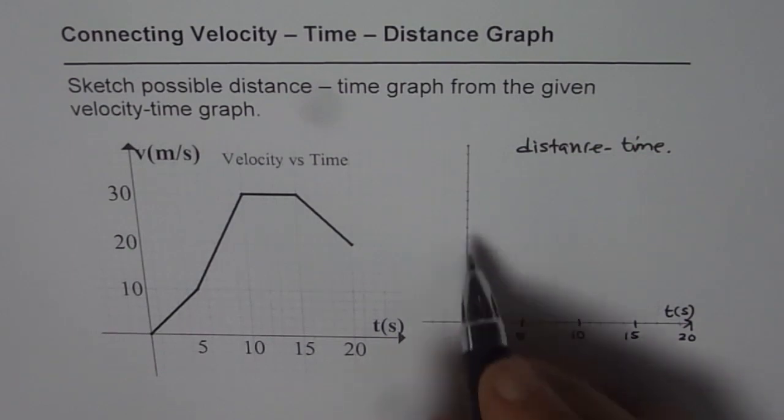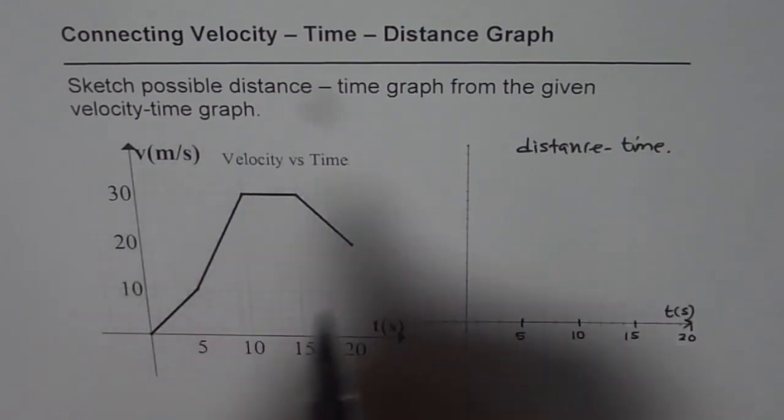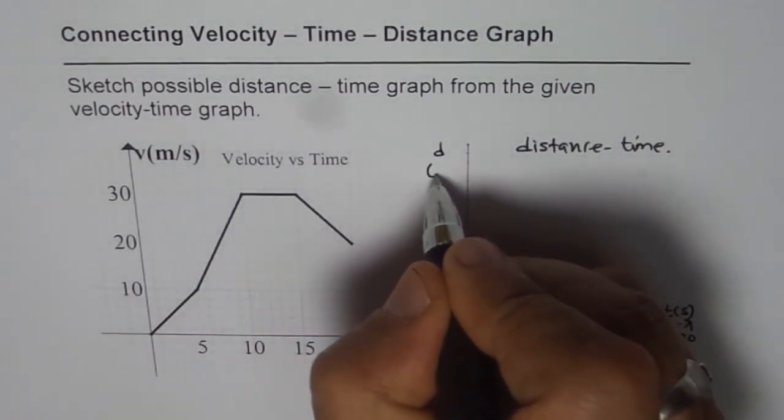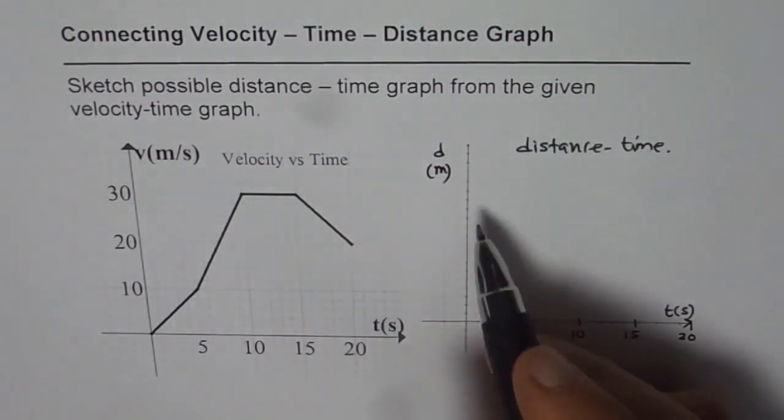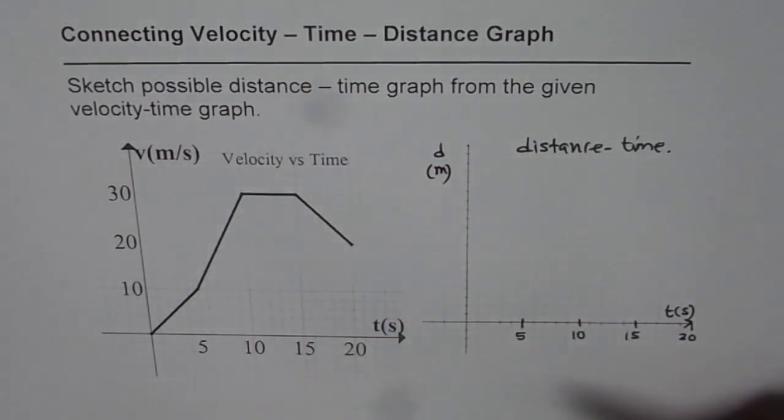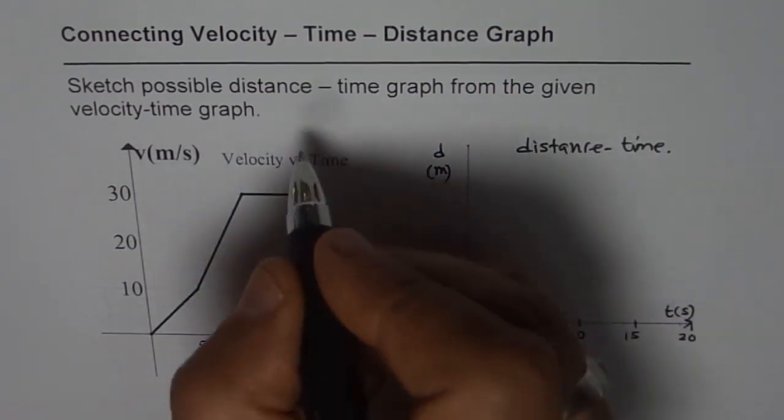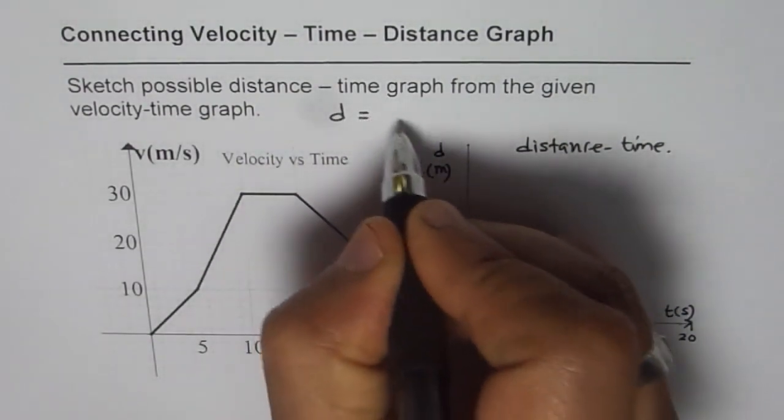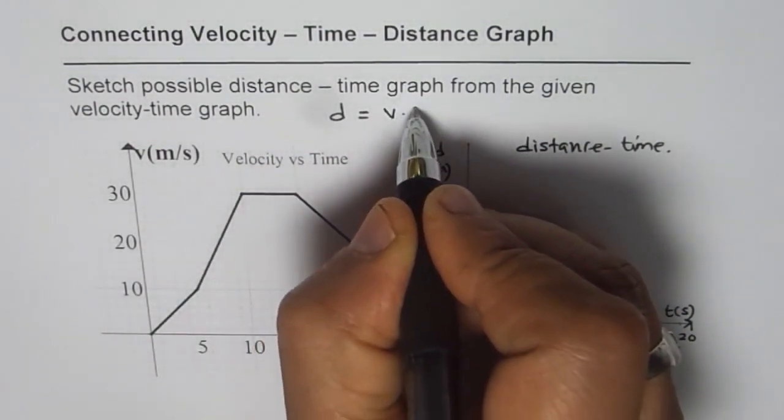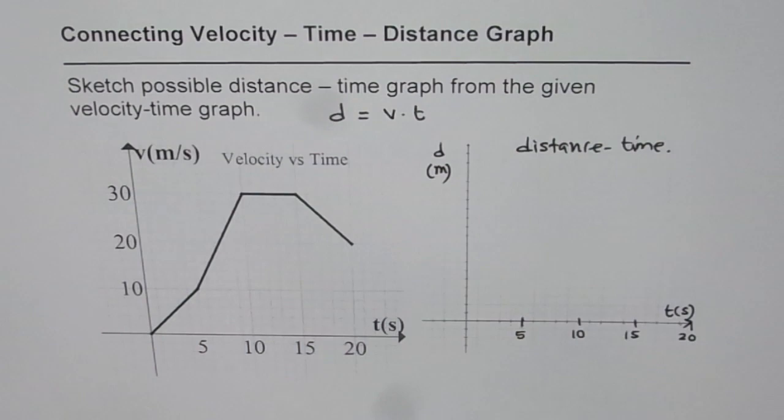Now along the y-axis will have distance and the unit of course will be in meters. Now before selecting the scale let us do some calculations. It is kind of critical. Now how is velocity, time and distance related? You know distance is velocity times time, right. So it is a product of velocity and time.